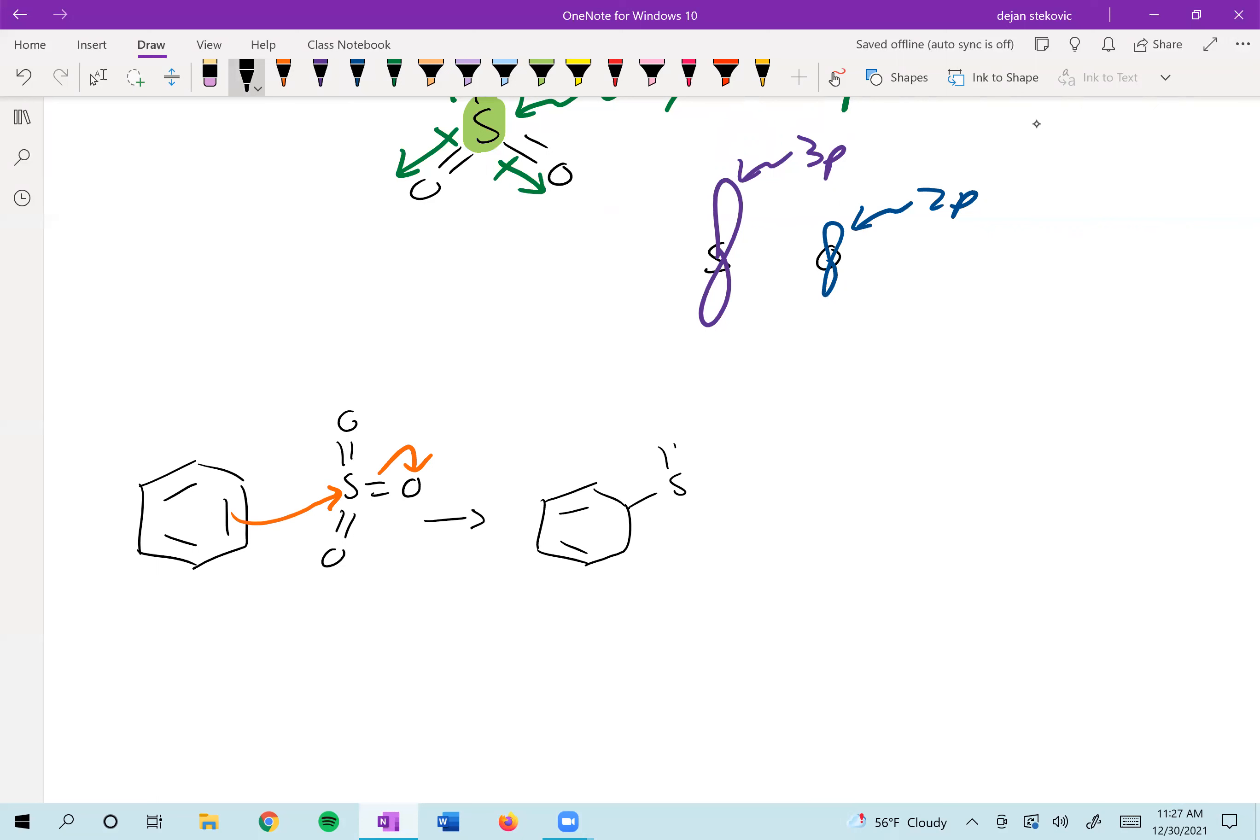Now we have a negative charge on that oxygen, and then we're going to deprotonate. Sulfuric acid is always going to have some water in there, so the best base is probably going to be water here. We break our carbon-hydrogen bond to form a carbon-carbon pi bond.